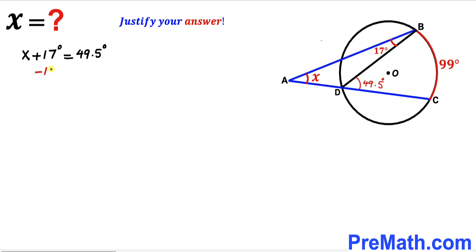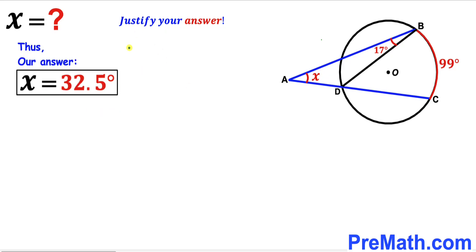Now I subtract 17 degrees from both sides to isolate angle x. The 17-degree terms cancel. Therefore our angle x turns out to be 32.5 degrees. After all the calculations, angle x equals 32.5 degrees. That's our final answer.